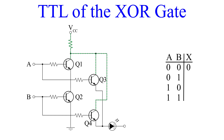Let's turn input B on. Input B is going to bias both transistors Q2 and Q4. However, Q2 does not have a collector current, so it remains off. Q4, on the other hand, has collector current from VCC. This turns on the transistor and the LED also turns on. So for inputs A equals 0 and B equals 1, the output is 1.